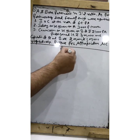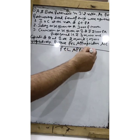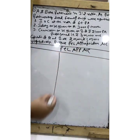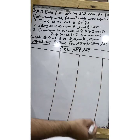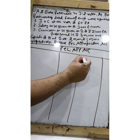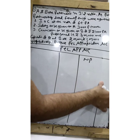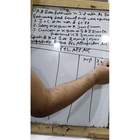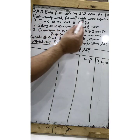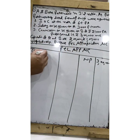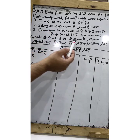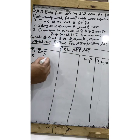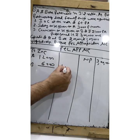First of all, we have this format of P&L appropriation account. We are going to start with the profit — net profit is ₹3 lakh. Now, first item: interest on capital at 6%. To interest on capital A and B: A's capital is ₹2 lakh, so 2 lakh × 6% = ₹12,000. B's capital is ₹1 lakh, so 1 lakh × 6% = ₹6,000. Total ₹18,000.